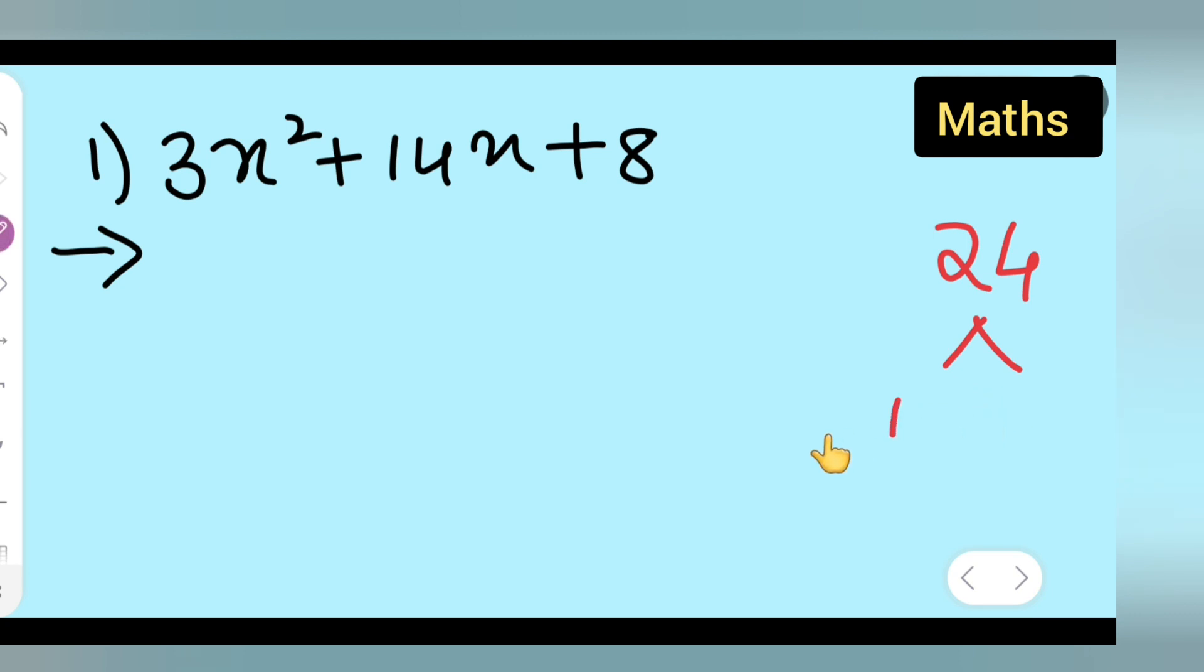So what you will do is 12 and 2. Now both will have a positive sign because 12 times 2 is 24, and 12 plus 2 will give you 14.